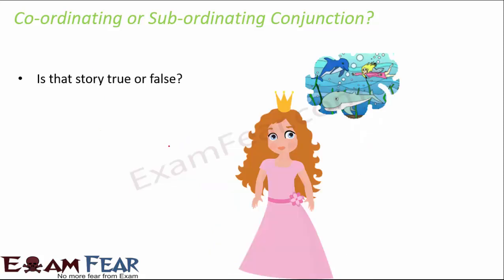The fourth example: 'Is that story true or false?' This is a question asking for options — true or false. The word 'or' gives us an alternative, and that is why it is a coordinating conjunction — specifically an alternative coordinating conjunction.